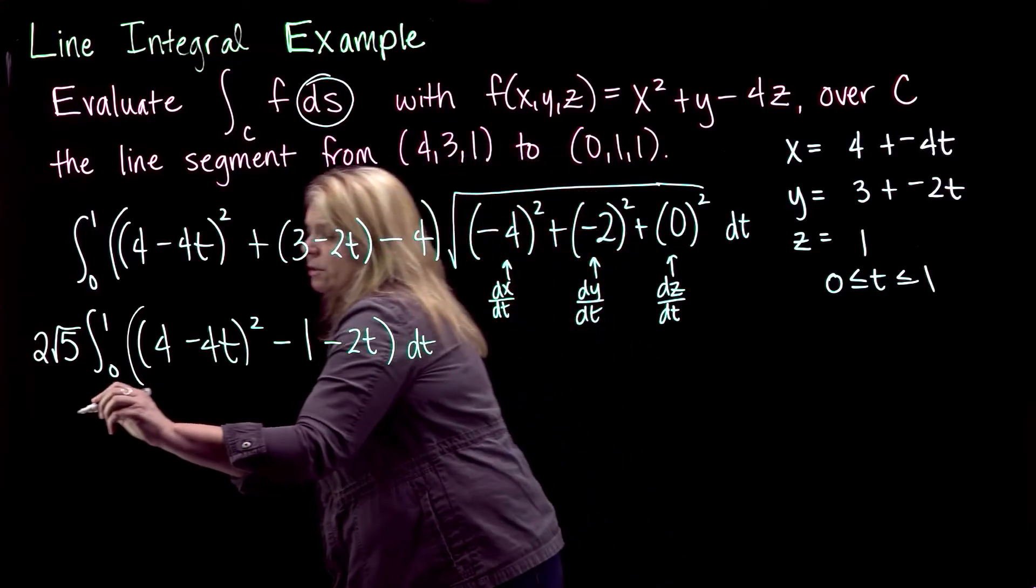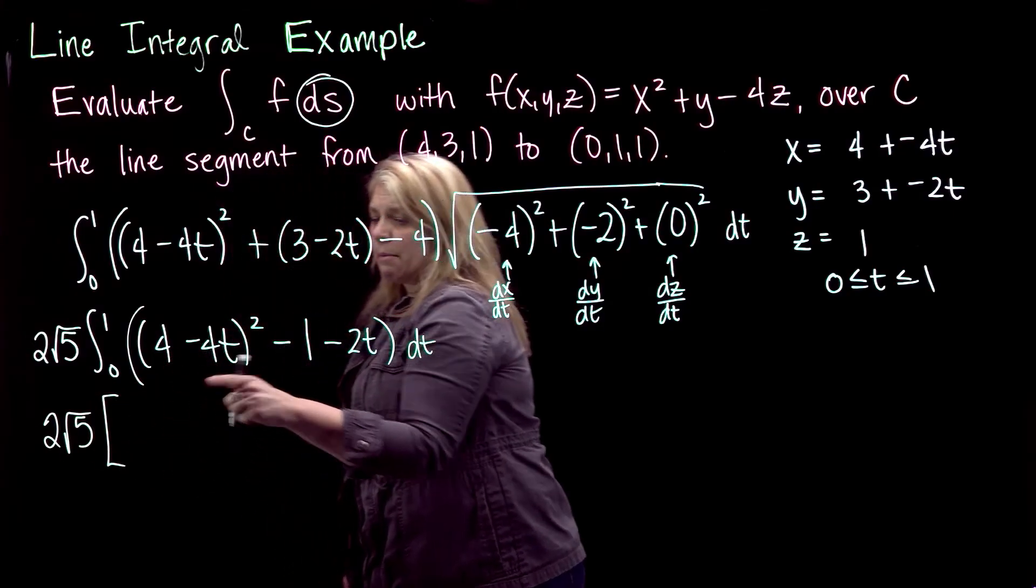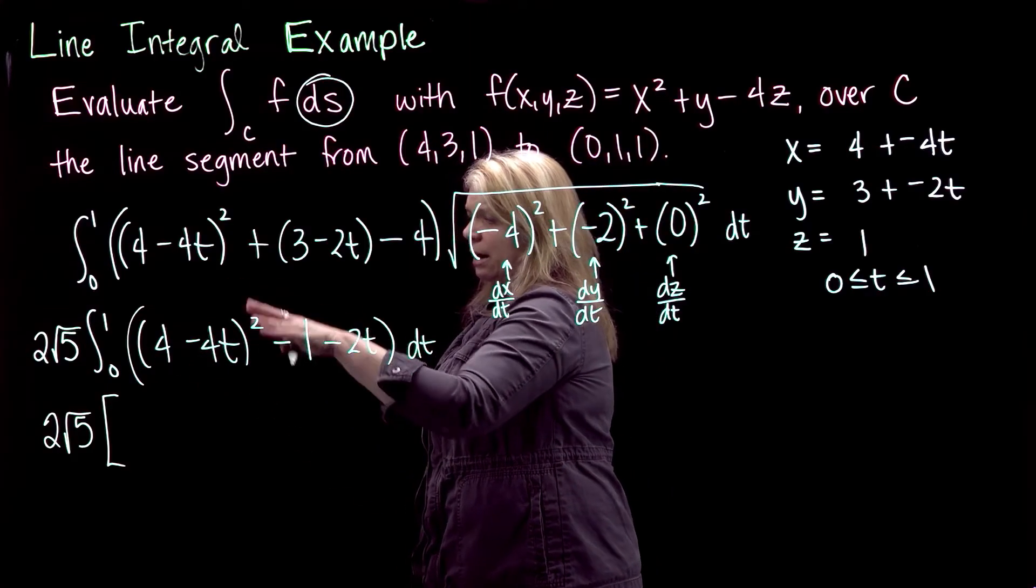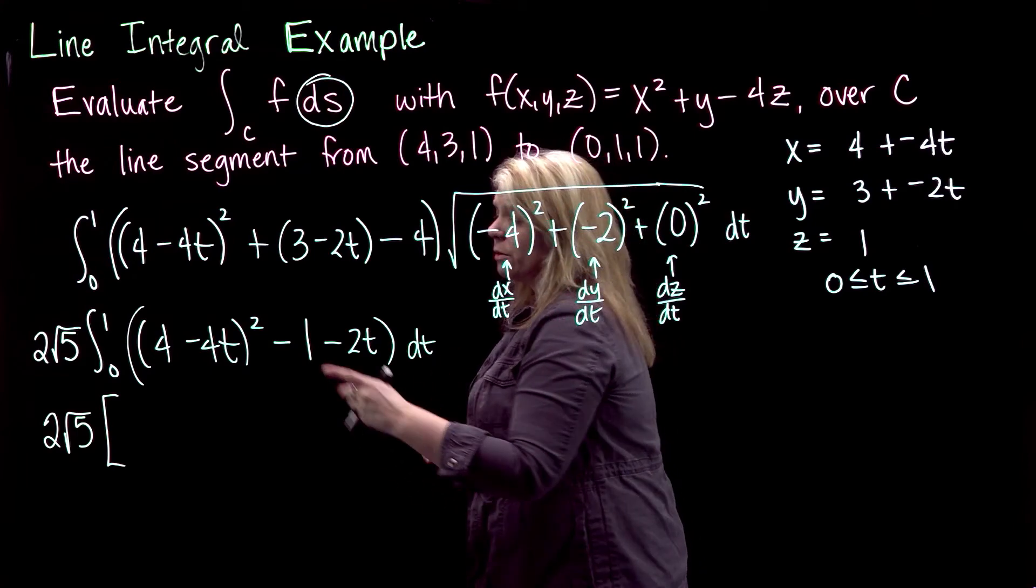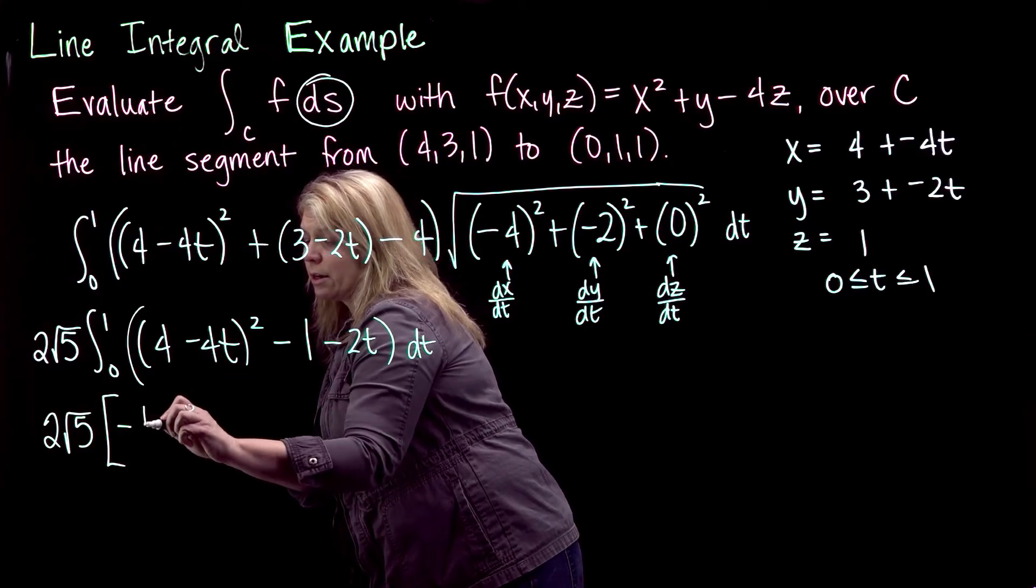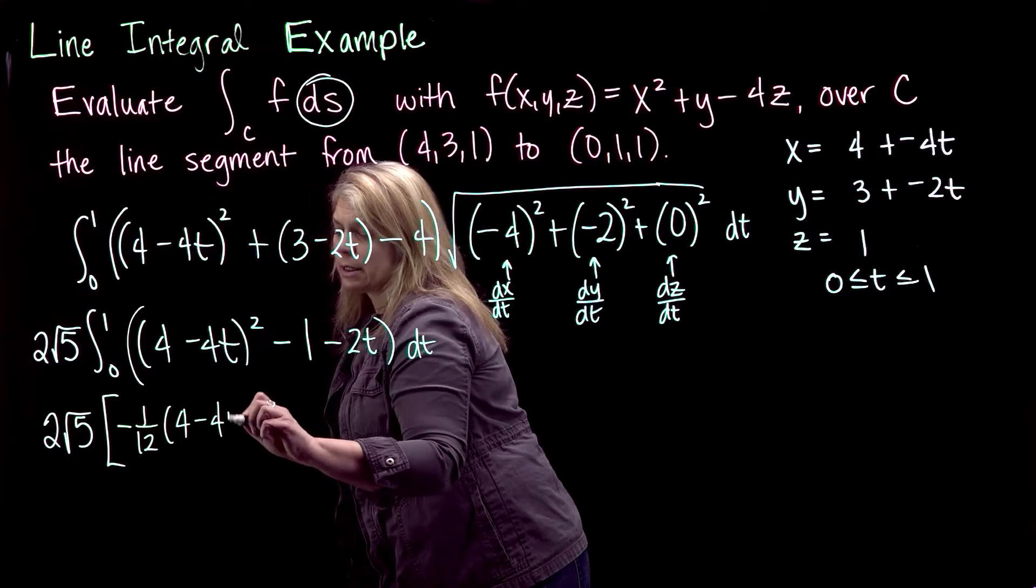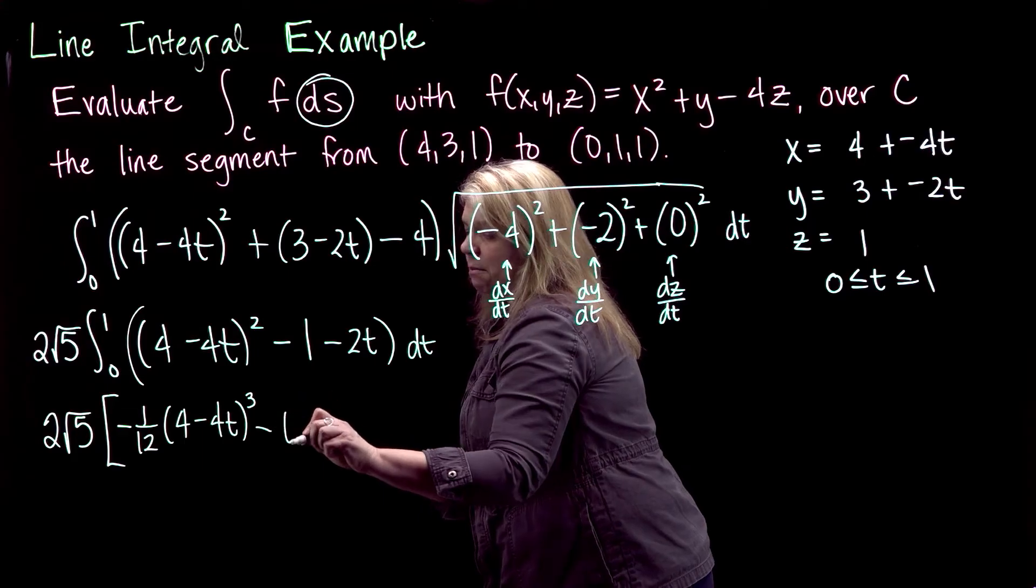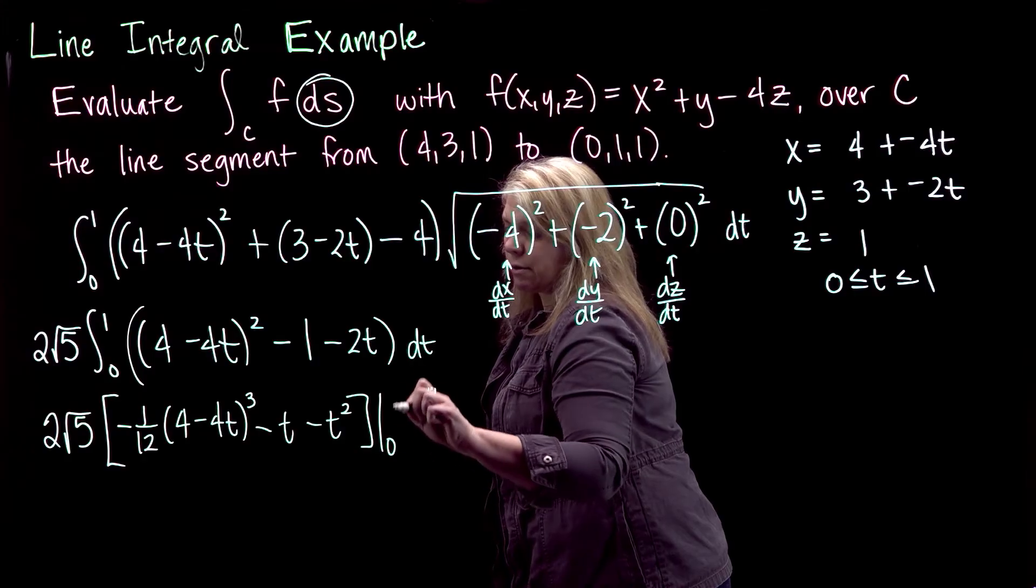Okay, so now I just need to do this integration, plug in my limits of integration. I'm just going to do a u substitution here, where I would let u equal what's inside this square and then think about my du. I'll get an extra negative 4 for my du, so I'll have a negative 1/4 here. So I'll have a negative 1/4 times a 1/3, so negative 1/12 times (4 - 4t)³, from that u substitution integrating that. And then minus t and minus t², and I'm going to evaluate from 0 to 1.